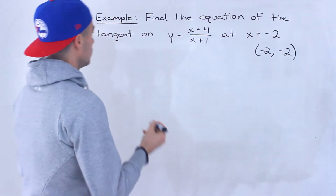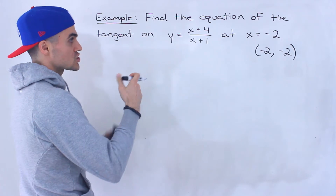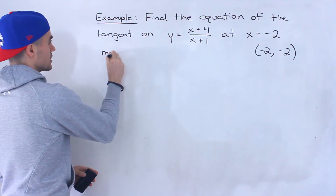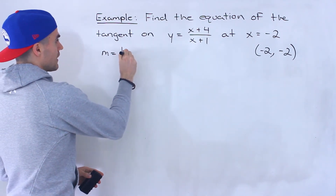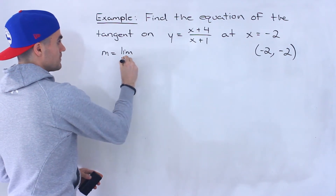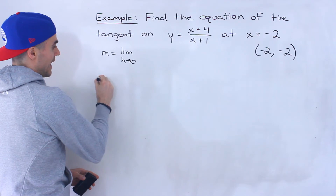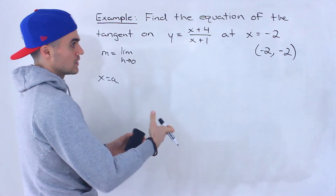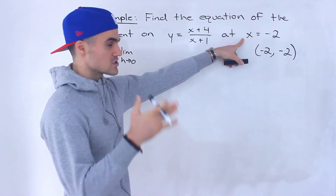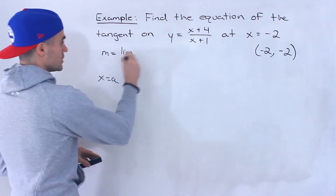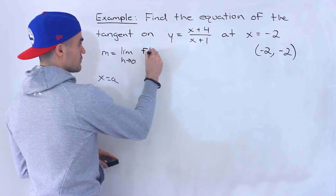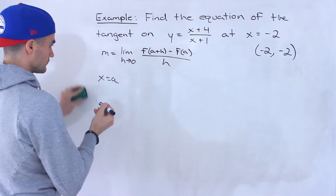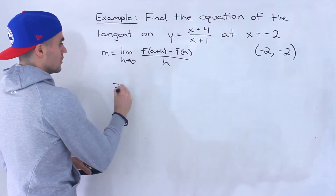The next step is finding the slope of the tangent for this function at x = -2. To do that, I'm first going to find a general expression for the slope of the tangent at an x value of a, and then plug in negative 2 to get the slope at that specific x value. So it's the difference quotient: the limit as h approaches 0 of f(a + h) minus f(a), all over h.